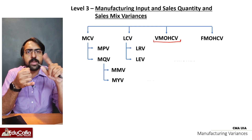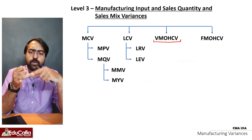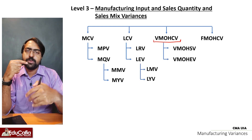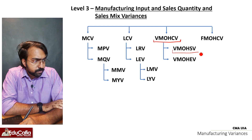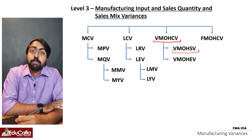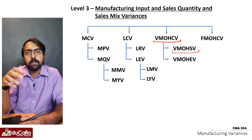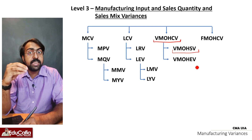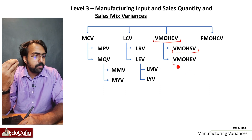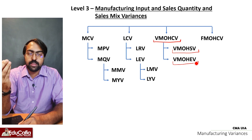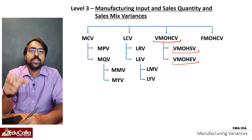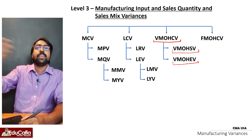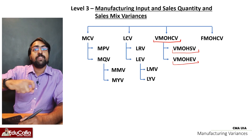This means the variable manufacturing overhead spending variance. This is the variable manufacturing overhead efficiency variance. If you get 200 units but we produce 300 units — that is efficiency. That is the variable manufacturing overhead efficiency variance.